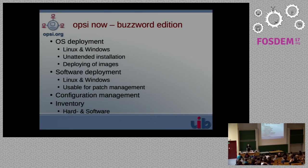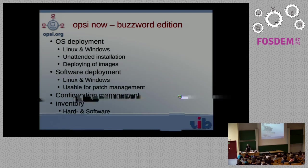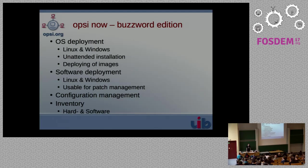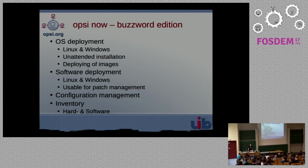If there's software, we want to configure it, so Opsi can also be used for the configuration management aspect. To make everything complete, we also have a hardware and software inventory so we know what hardware and software is installed on our clients. The hardware inventory is important mostly for the Windows side, because if you want to deploy an operating system you usually need drivers for your systems, and the easiest way to deploy the right drivers is to know what hardware is inside the computer.